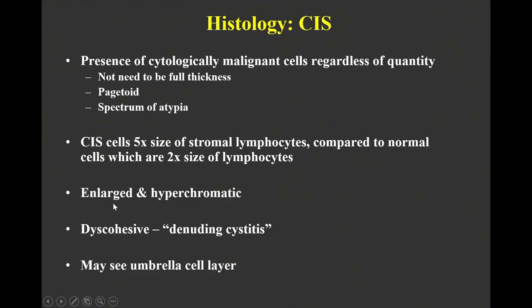Some CIS will show prominent nucleoli, but more often they're just large and dark nuclei without a lot of nucleoli. CIS cells tend to be very discohesive, which is why we get them on positive cytologies. And as mentioned, you may see an umbrella cell layer.